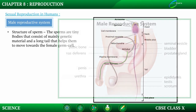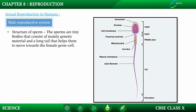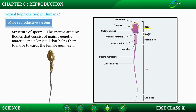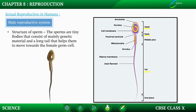Sperms are very tiny bodies that consist mainly of genetic material and a long tail that helps them move towards the female germ cell. Sperm cells are divided into three parts: the upper portion is the head, then the middle is the neck, and last is the tail. The nucleus is present in the head of the sperm, and the nucleus transfers genetic material or genetic information from parents to their offspring.